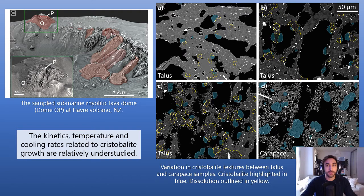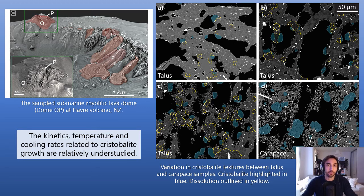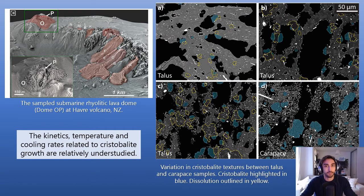By looking at differences in volume proportion, crystal size distribution and number density of cristobalite crystals between the carapace and the flanks, we can begin to assess spatial differences in crystal growth kinetics.